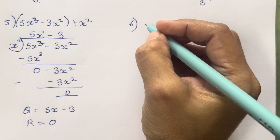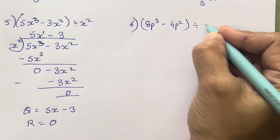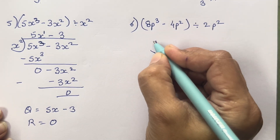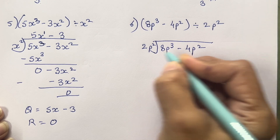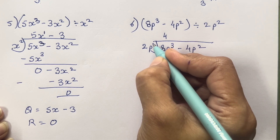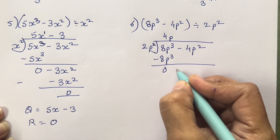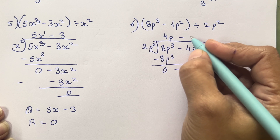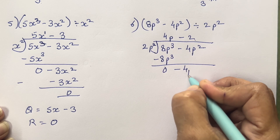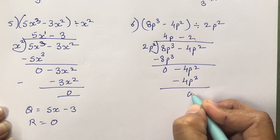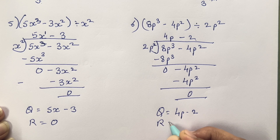The sixth sum is 8p³ minus 4p² divided by 2p². Very easy — the 2 times table we have to use. 2p² into 8p³ minus 4p². 2 fours are 8, 2 is here, we need 3, so we have to take 1p over here, giving 1p³. Minus sign — 2 twos are 4, p² is already there so we need not add p. So we have got p² subtracted. Quotient is 4p minus 2, and remainder is 0.